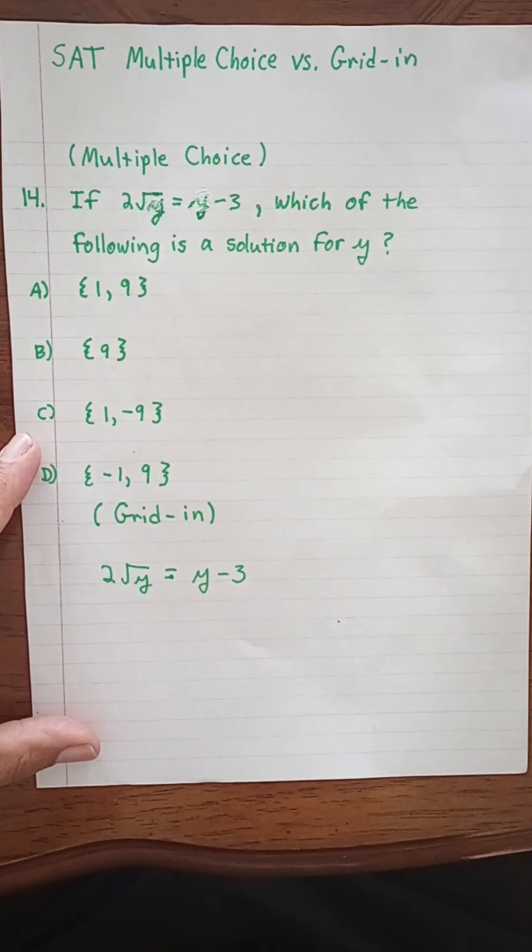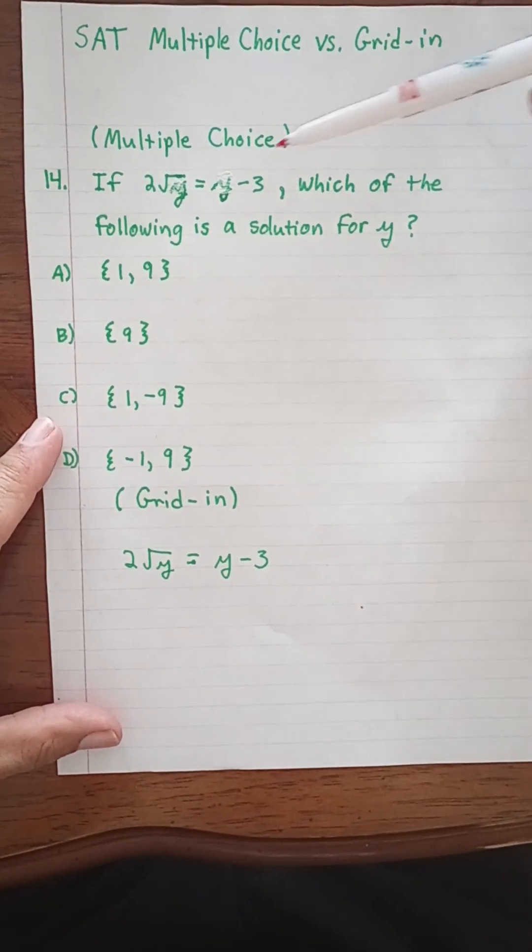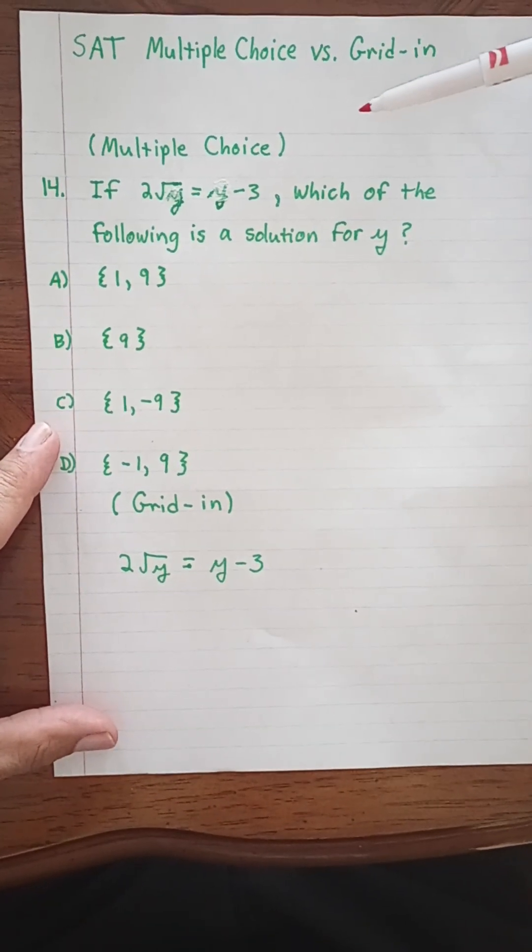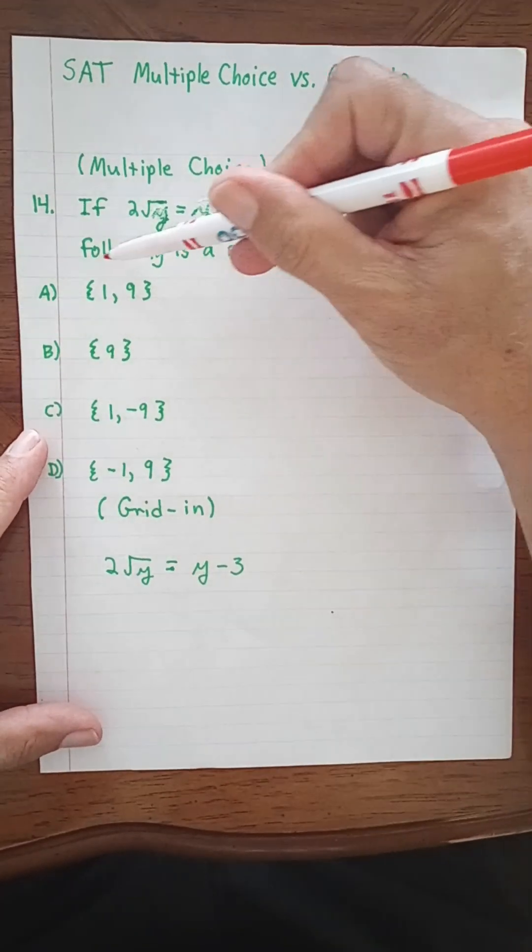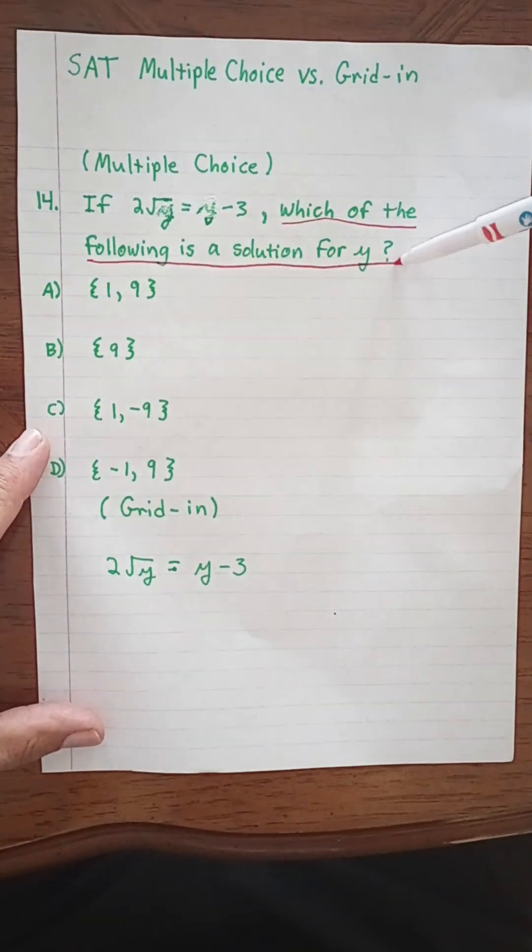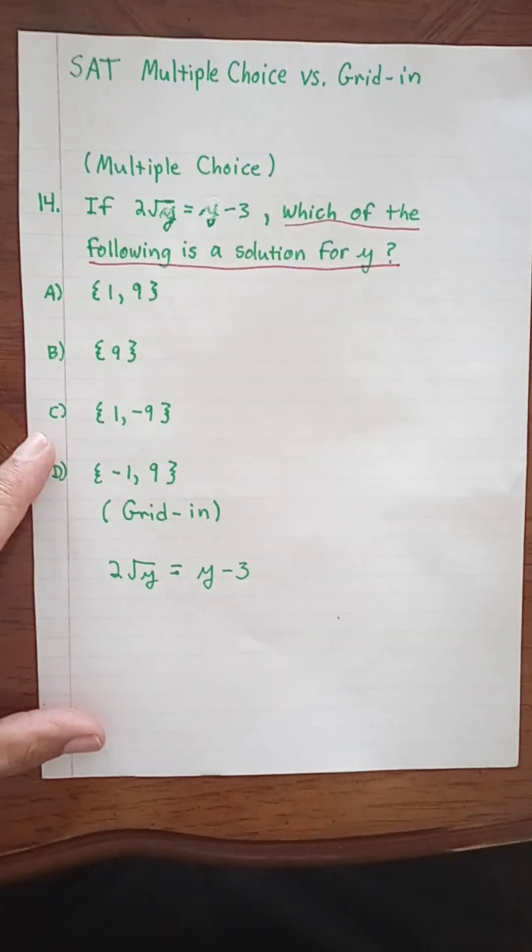So let's take a look. The first thing we're going to look at is the multiple choice version we have here. If 2 times the square root of y equals y minus 3, which of the following is a solution for y? This is a simple back solve.